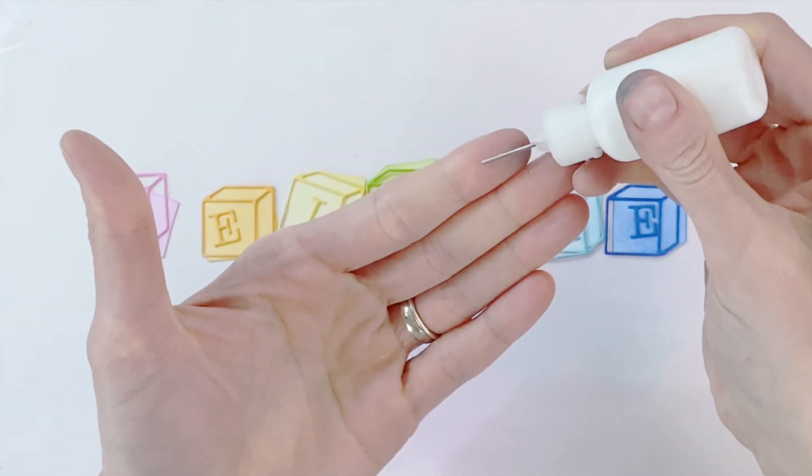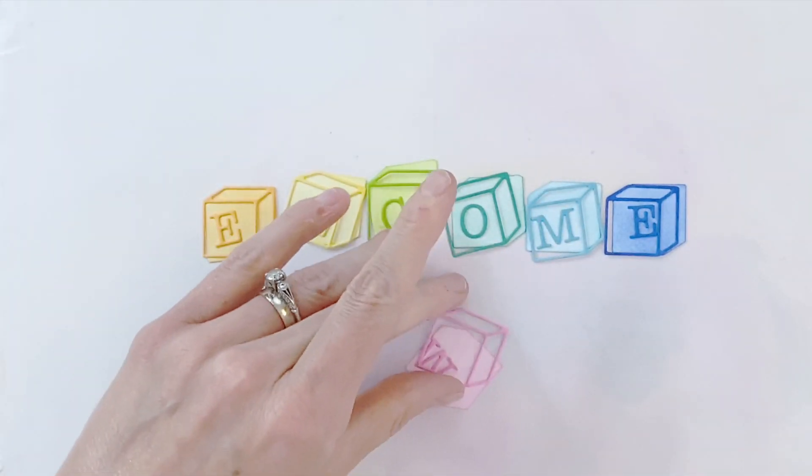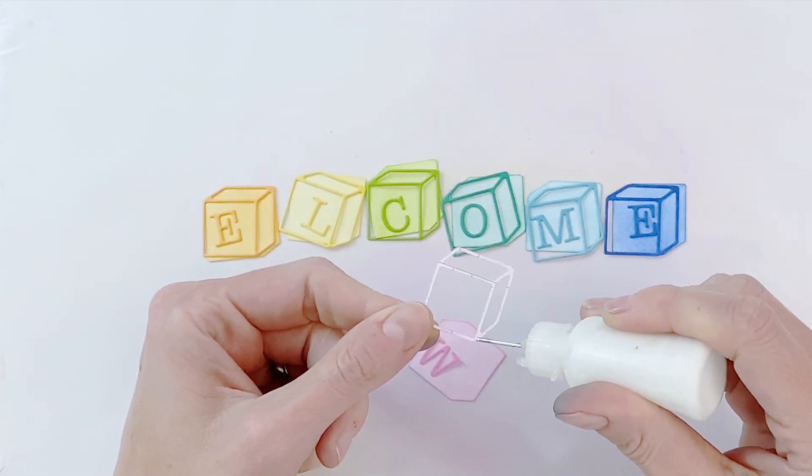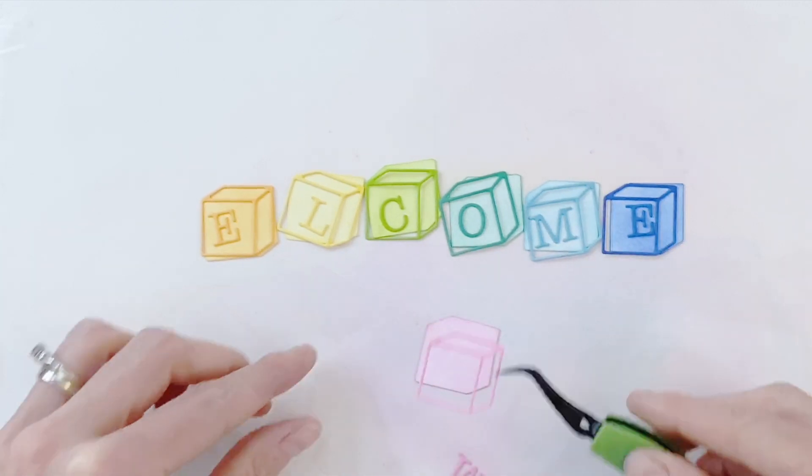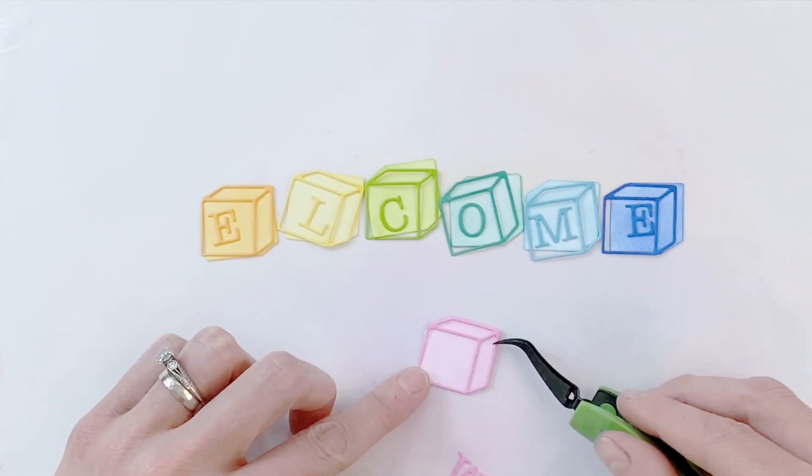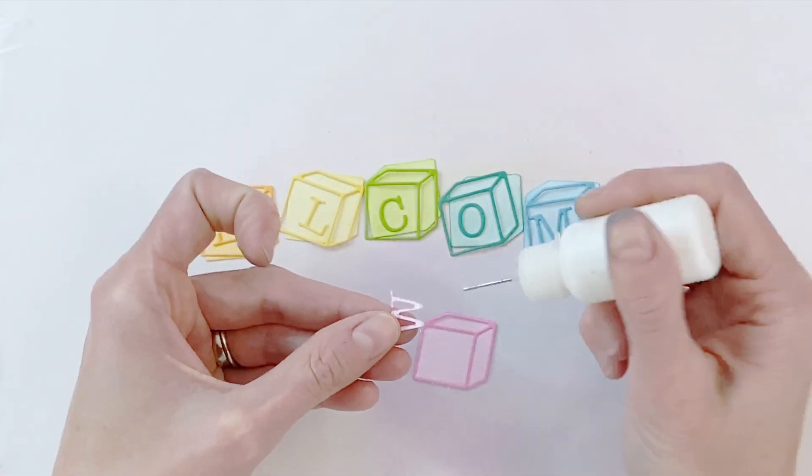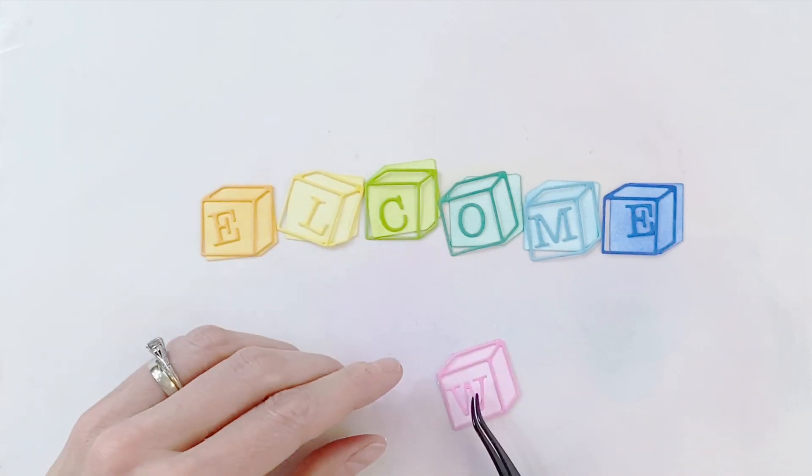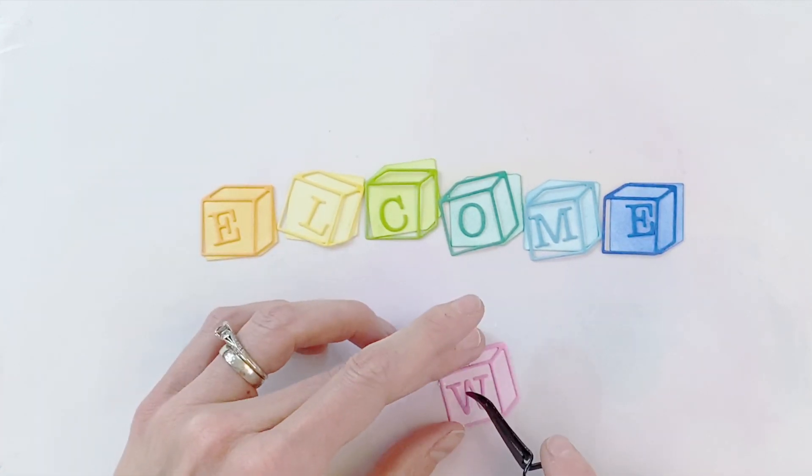I have a little precision glue bottle here filled with Mod Podge matte. You could use whatever adhesive you like. A lot of people like the Ranger Multimedia Matte. That works well. Definitely want to use something with a fine nozzle because these are very thin little pieces of paper and you don't want to get glue everywhere. Also this Mod Podge matte dries matte.